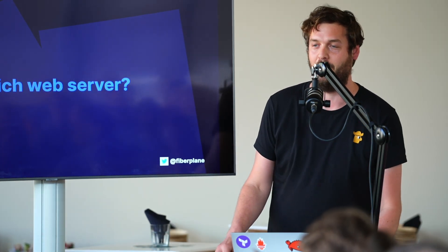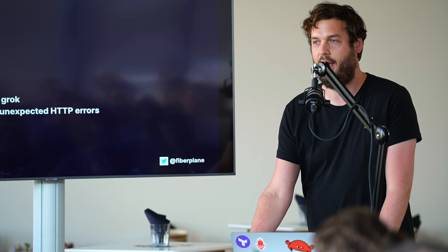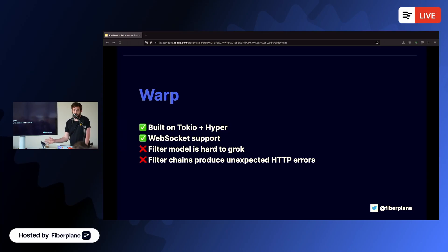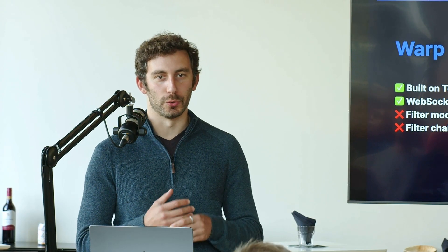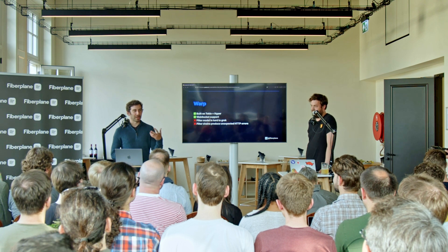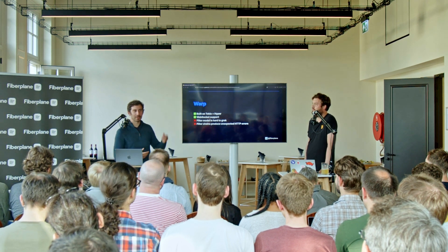Then came the question of which web framework to use. We went through a couple. One highlight — or low light — was Warp. We tried it out for a bit. It's built on Tokio and Hyper, which is good, and it has web socket support. But it's quite difficult to understand. Warp uses a filter model where you filter requests through a chain of nested filters. You get very weird errors — when a request doesn't match something, you might expect a 404 but get a 405 method not allowed instead.